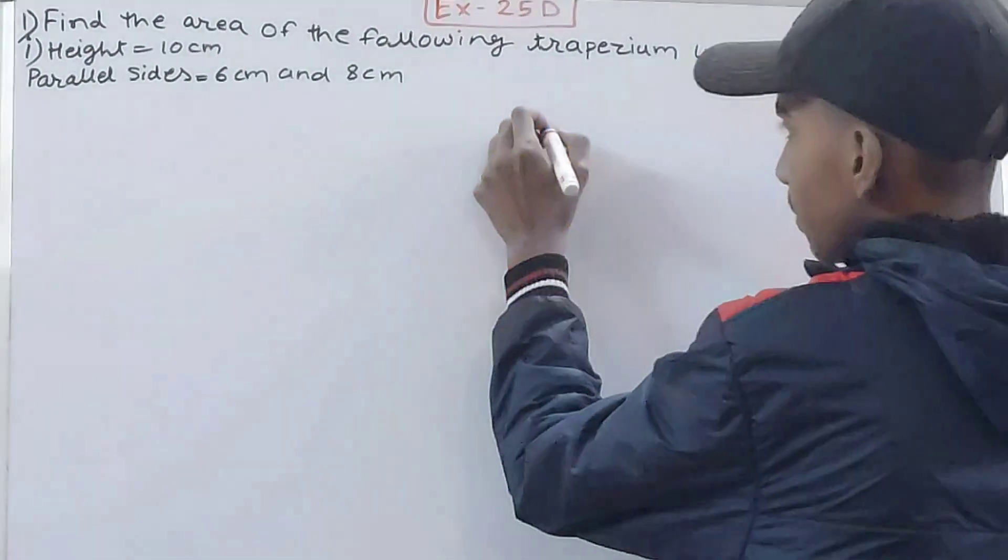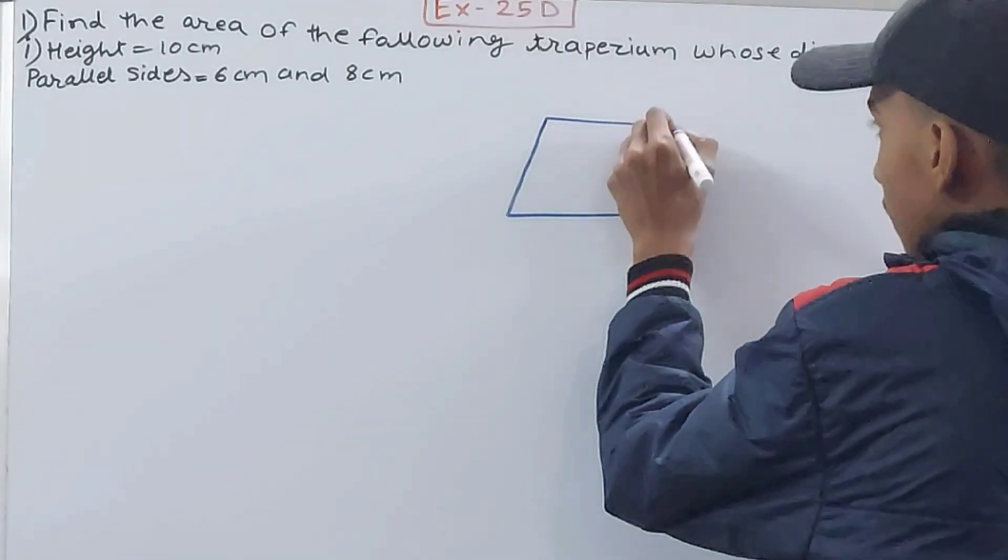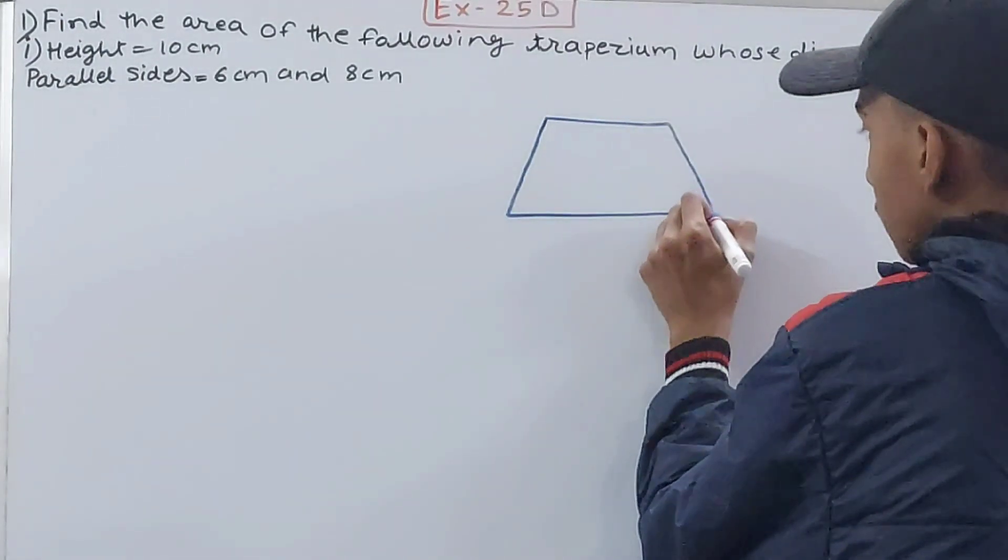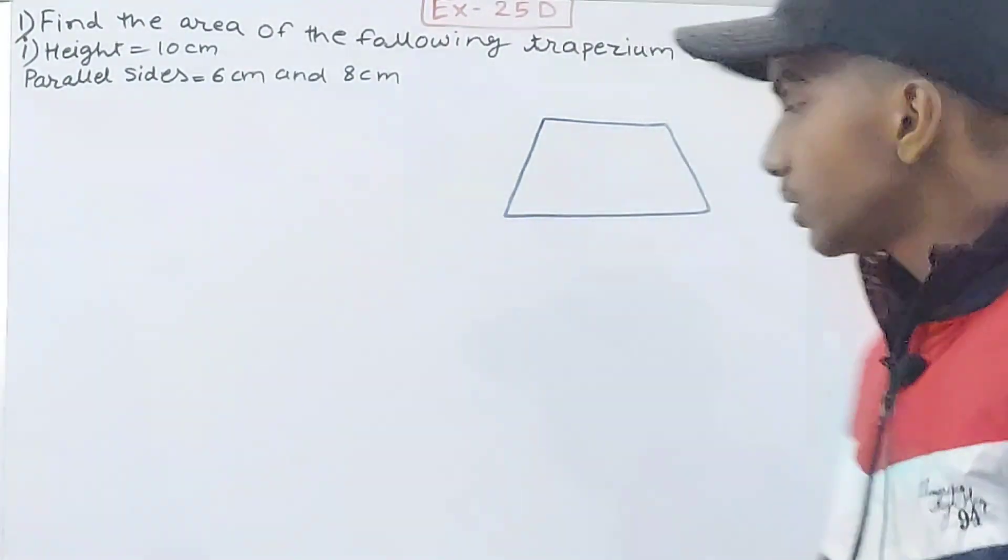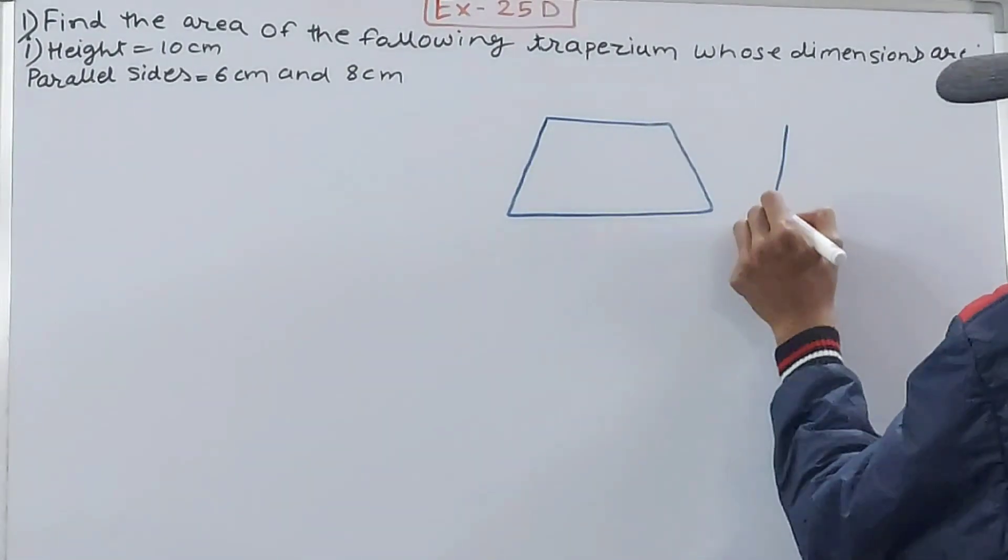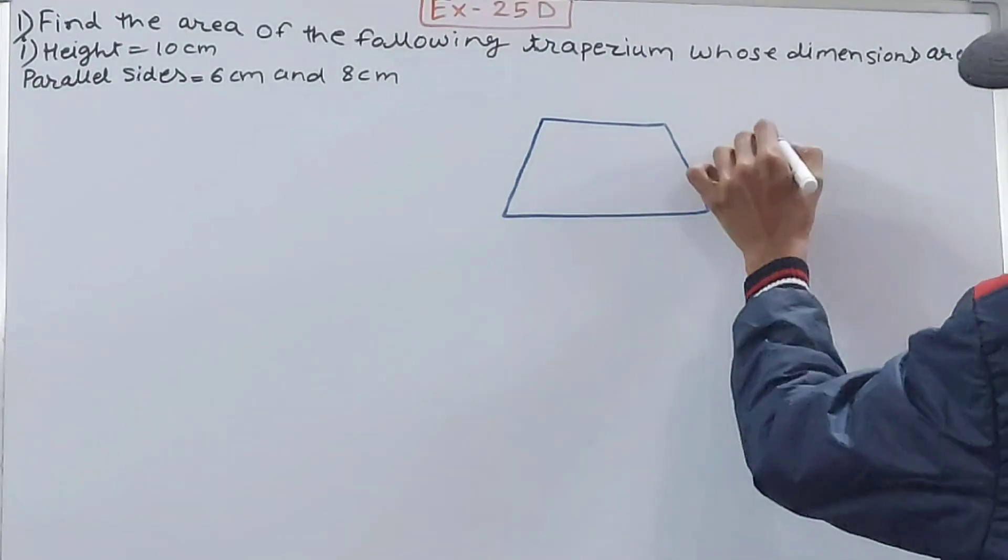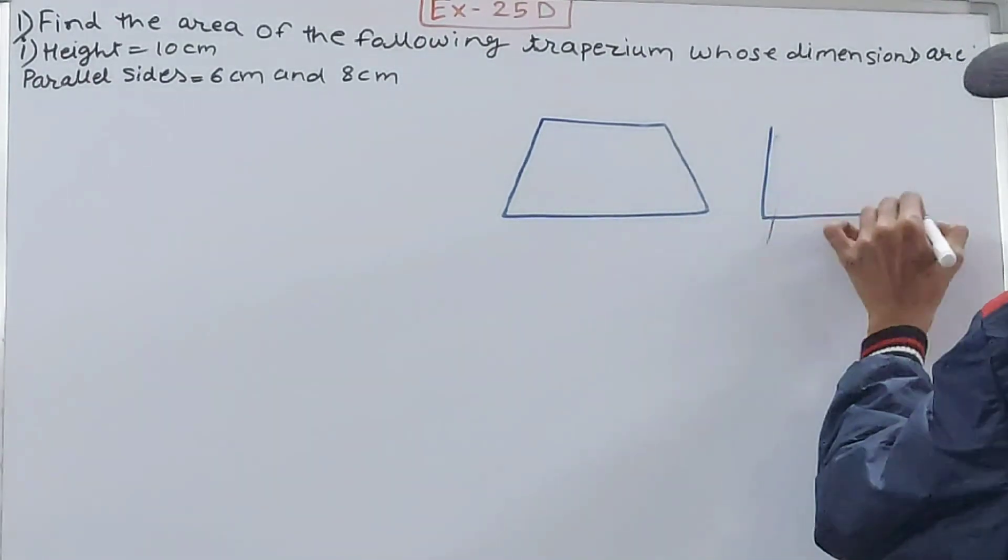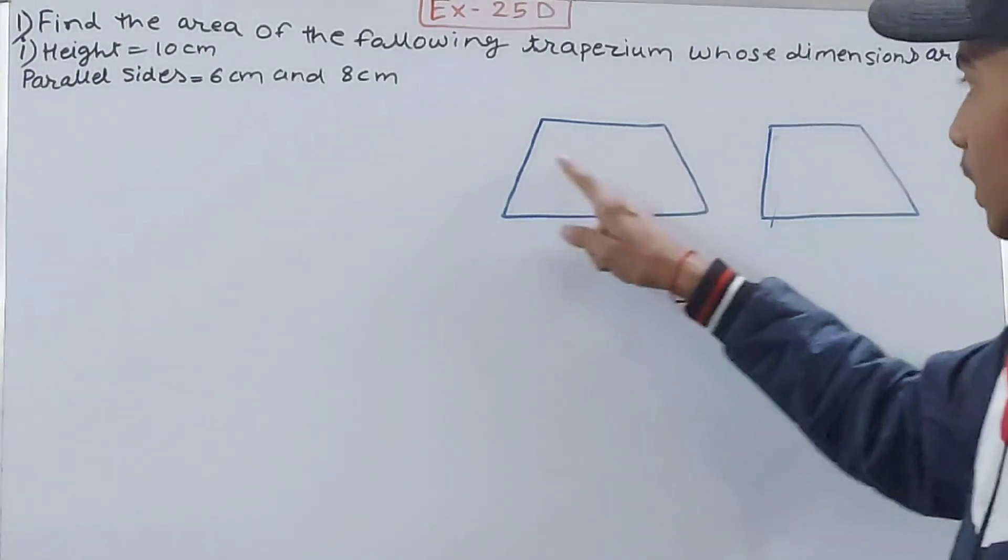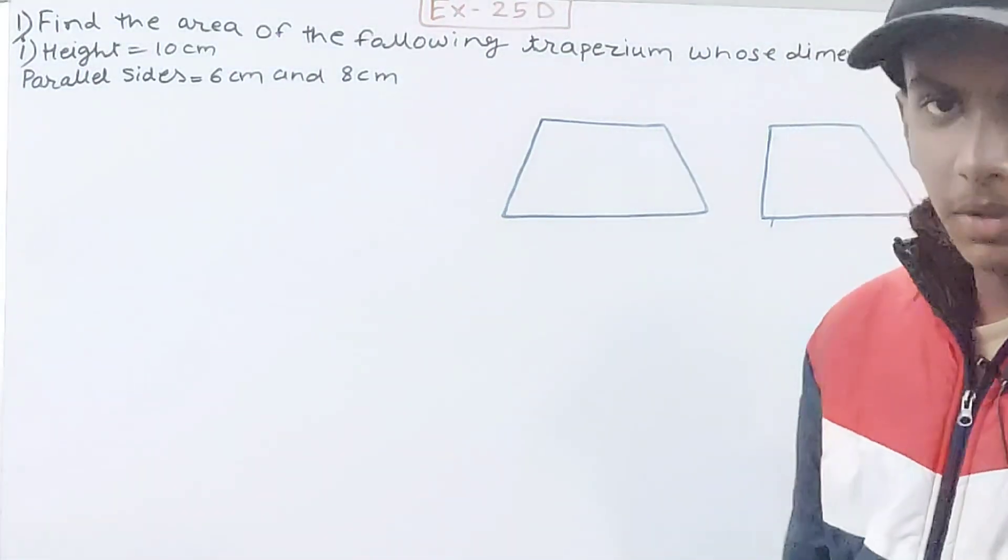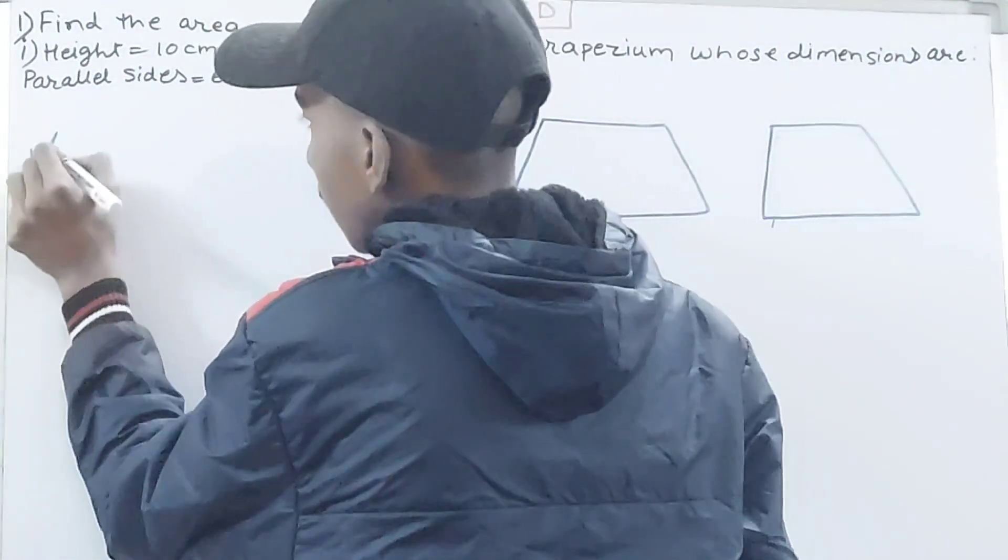There are two types of trapeziums. One is your isosceles trapezium, which looks like this, in which there's one pair of sides that is parallel and the other pair of sides is not parallel. This is your isosceles trapezium. Another trapezium we have is called the non-isosceles trapezium, something like this. You can see these two sides here, they are not equal. So this is the main difference between these two types of trapeziums.